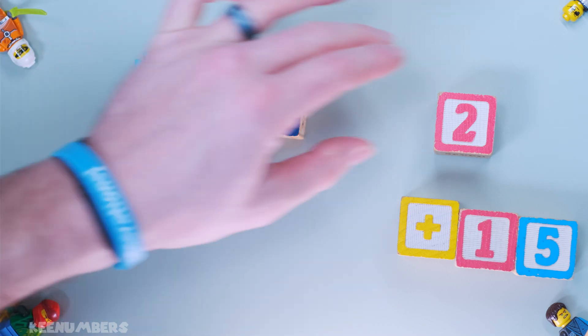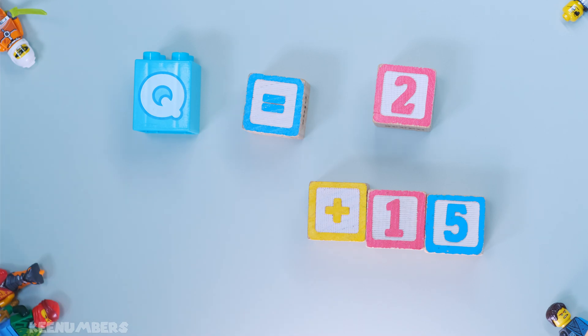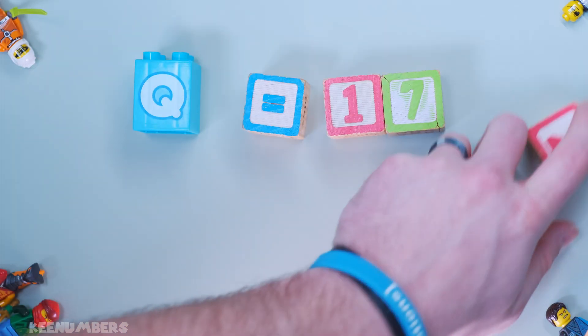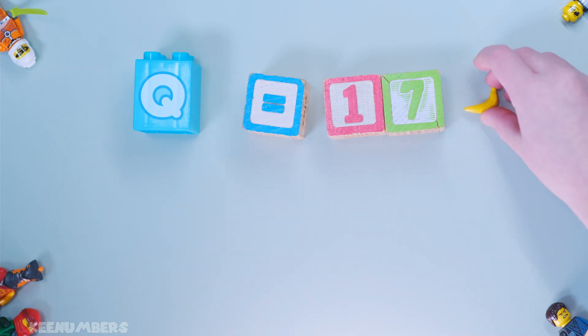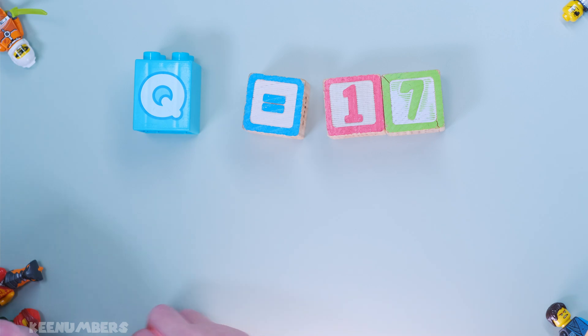That means Q is equal to two plus 15. Two plus 15, it's good old 17. Q is 17. Good job. Keep those scales balanced.